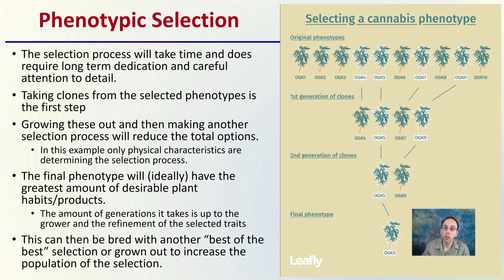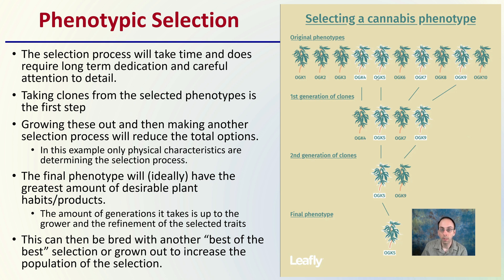It's important to keep in mind that we see here original phenotypes — there are a whole bunch listed. We have first generation clones, second generation clones, and then the final phenotype. Here we can see the OG K5; you can trace that lineage back. It was one of many, making it to the first generation, second generation, and ultimately the final generation.